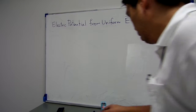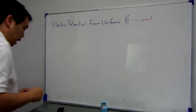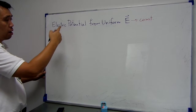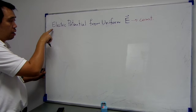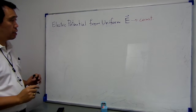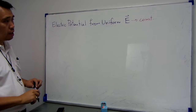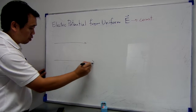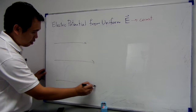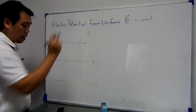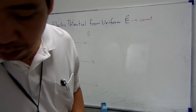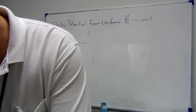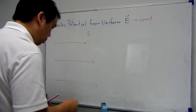Now, let us look at a little bit more complex situations. We will stick on the condition that we have a uniform electric field, or constant electric field. And like this, we have the electric field like this. But now, we want to calculate the electric potential difference between two points.